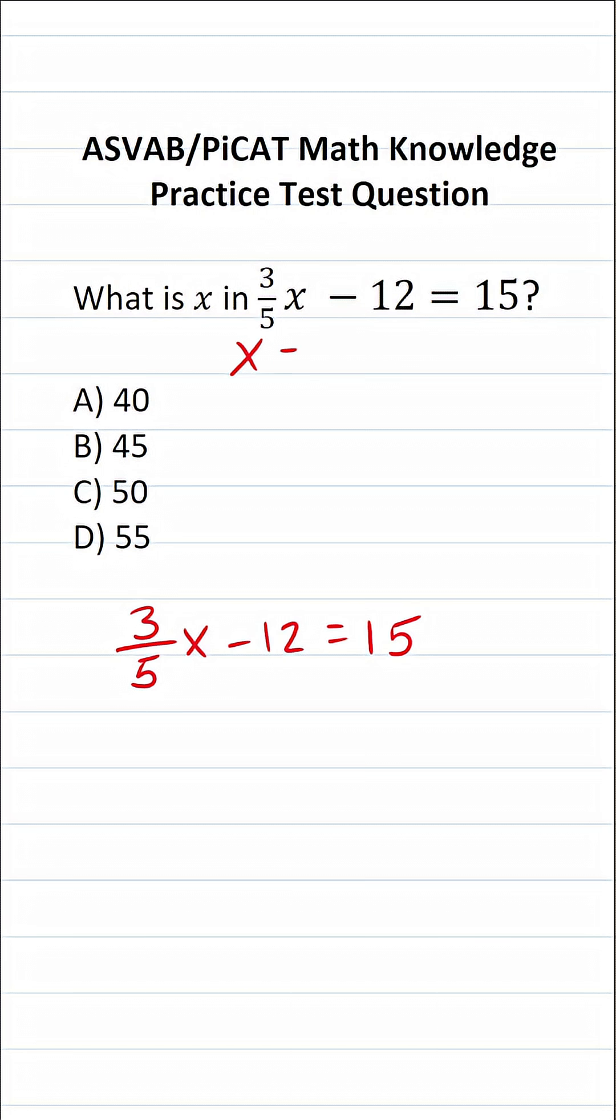We're solving this equation for x, meaning we want to get x equal to something by itself. The first thing I'm going to do is add 12 to both sides of this equation. In doing so, this crosses out, leaving me with 3/5x equals 15 plus 12.